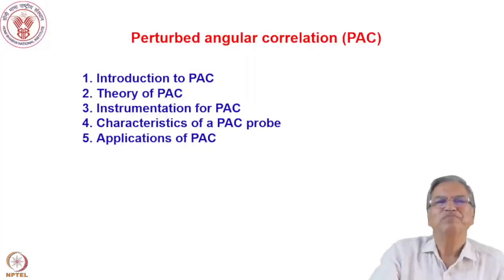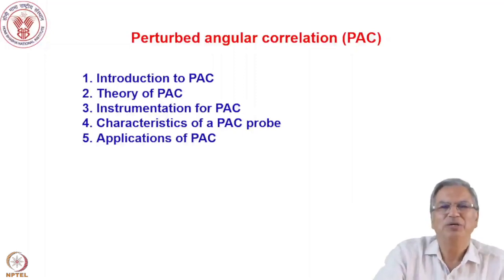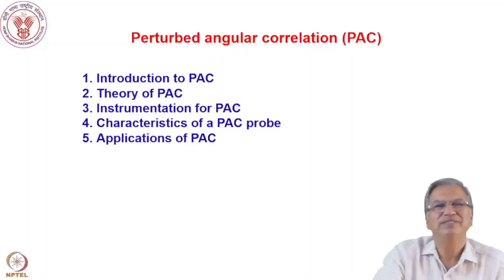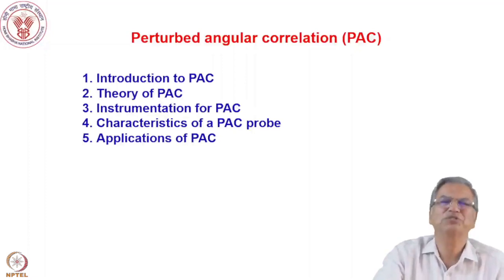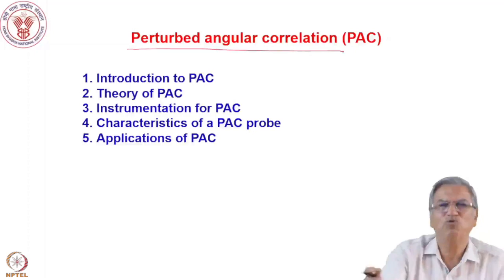Hello everyone. In the previous lecture, I introduced a topic called positron annihilation spectroscopy, which is a nuclear probe technique to study electron momentum distribution and also the defects or pore size in different types of materials. Now I will discuss another technique which is also a nuclear probe technique.